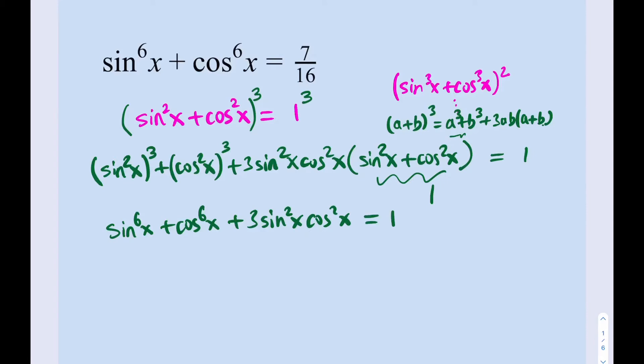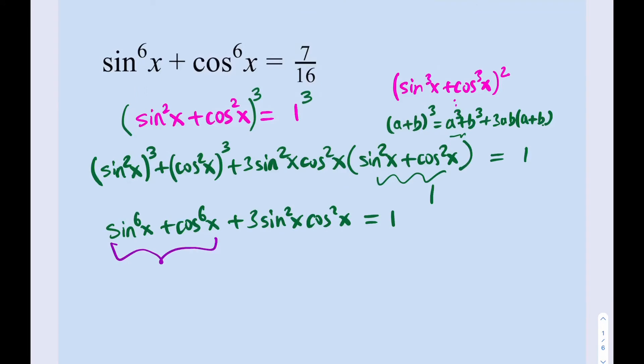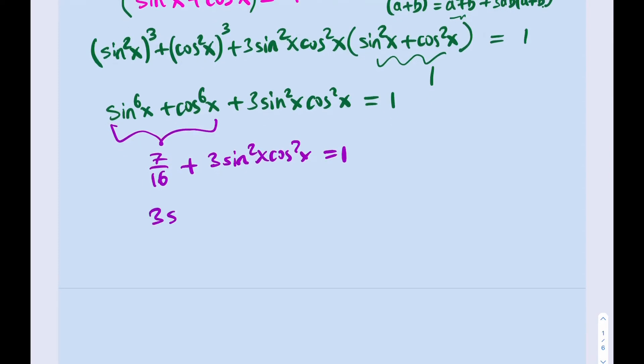Well, things simplified a little bit. It's better. What are we going to do here? Well, we do know the value of sin^6(x) + cos^6(x). It's given. So we might as well substitute, right? So let's go ahead and substitute that into our equation. So this is going to be 7/16 + 3sin²x·cos²x = 1. Now, what I'm going to do next is subtract 7/16 from both sides. And that's going to give me 3sin²x·cos²x = 1 - 7/16. And that is going to equal 9/16. Awesome.